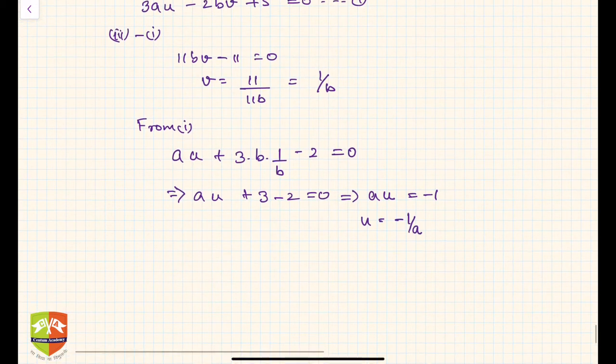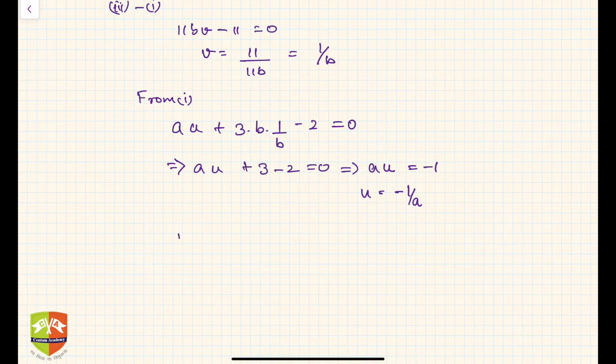Now I know 1 upon x was u. This implies x will be equal to 1 upon u, reciprocal. So this is equal to nothing but negative a, because u was minus 1 upon a.